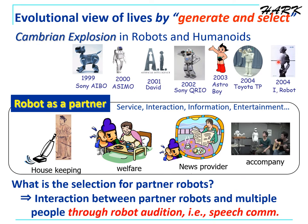A lot of robots have been developed, which represents a brilliant explosion in robotics. From an evolutionary viewpoint — that is, a generate-and-select scheme — a selection criterion for partner robots is listening capability. This is because we usually communicate with each other via voice and speech.